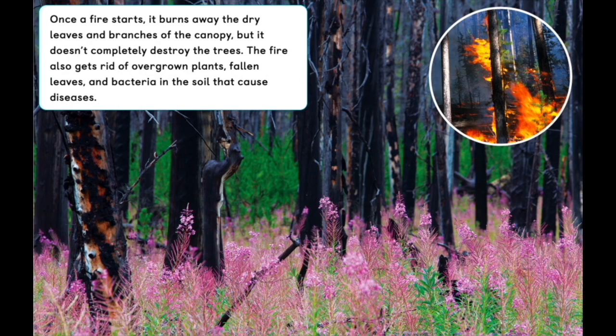Once a fire starts, it burns away the dry leaves and branches of the canopy, but it doesn't completely destroy the trees. The fire also gets rid of overgrown plants, fallen leaves, and bacteria in the soil that cause diseases.